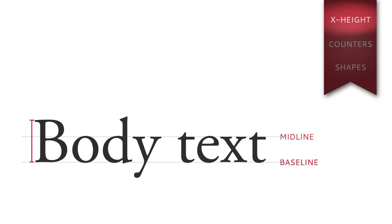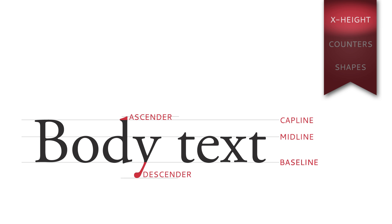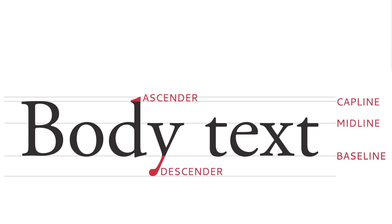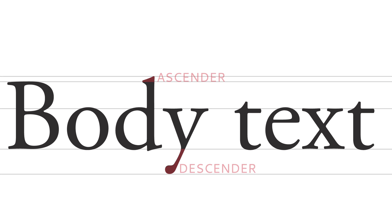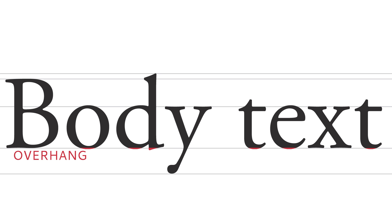Capital letters are measured with cap-height, the distance between the baseline and the cap-line. Parts of letters extending above the cap-line or below the baseline are called ascenders or descenders, and are measured with ascender or descender heights. Parts of letters hanging below the baseline that don't reach the descender line are called overhang.